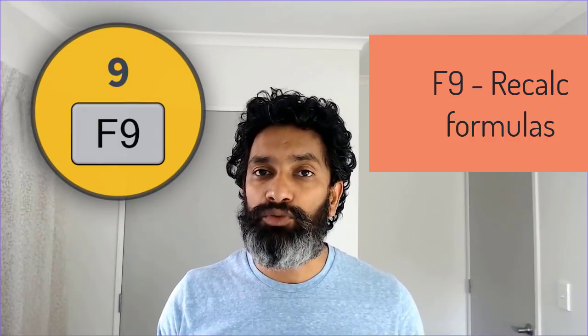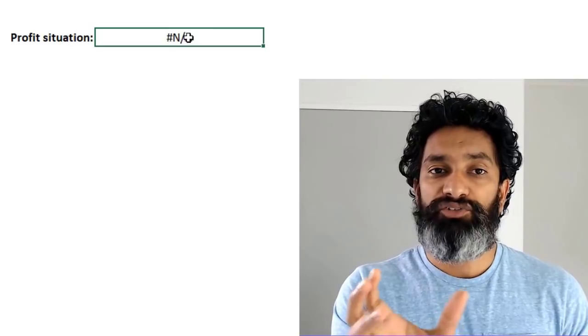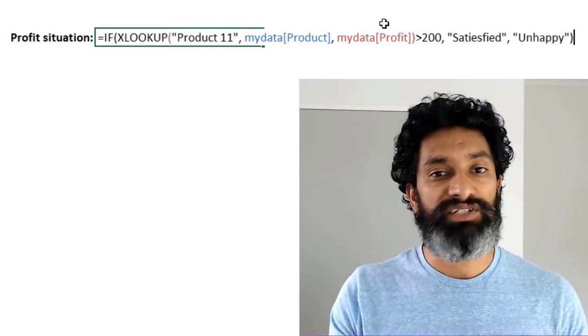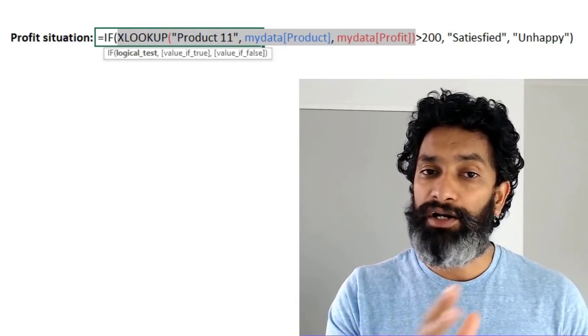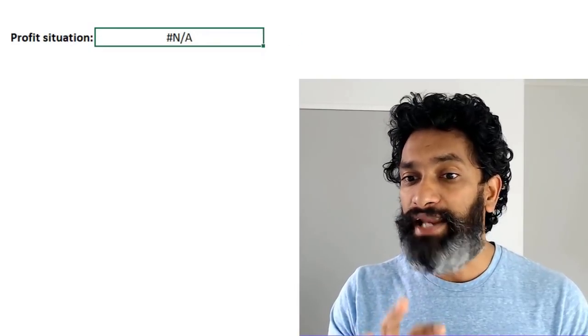The third function key shortcut is F9. Normally F9 recalculates your formulas — you don't usually need it since Excel is set to automatic calculation, but you can use it to force a recalculation. F9 also has a special purpose when building large or complex worksheets. If you have a big formula giving an error and you don't know where it's coming from, you can use F9 to debug it. Just open the formula, select a portion of it, press F9, and it will evaluate only that part to show the result — helping you narrow down the problem.